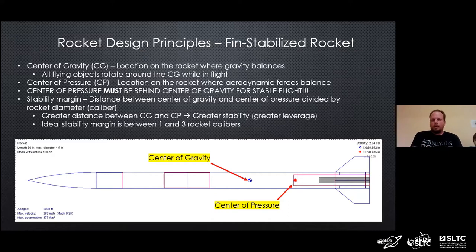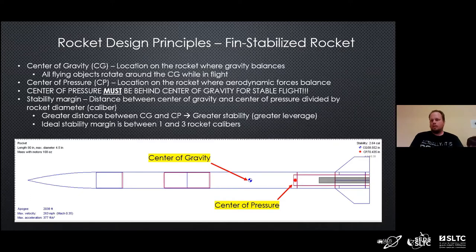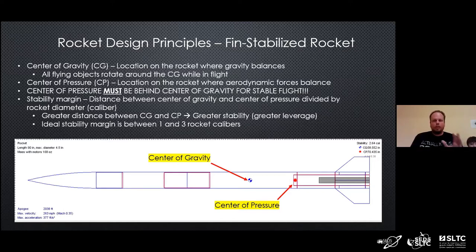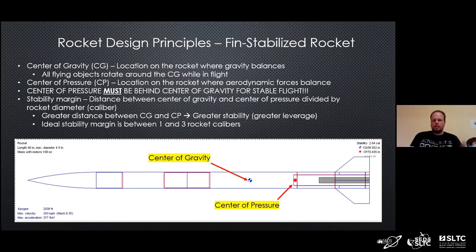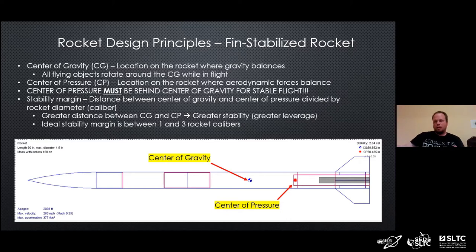That's a rough rule of thumb. Theoretically, any positive stability margin means the rocket should be stable, but that gives us no margin for error in our calculations or less-than-ideal flying conditions. So we say one caliber as a minimum rule of thumb, and three as an upper bound — we'll talk about why later. The key takeaway: all things rotate around the center of gravity when flying; the center of pressure must be behind the center of gravity for stability; and the farther apart those two points are, the more stable the rocket will be. We can imagine it as a simple lever problem — the center of gravity is the fulcrum, and the center of pressure is the force applied; the farther out from the pivot point, the more effective it will be.